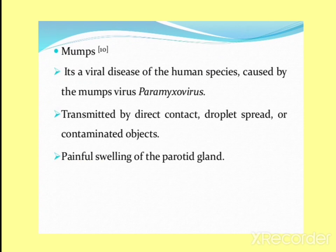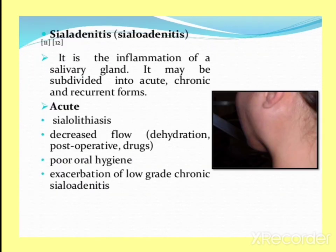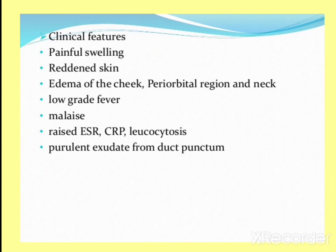Mumps is a viral disease caused by the mumps virus, a paramyxovirus, transmitted by direct contact, droplet spread, or contaminated objects. It causes painful swelling of the parotid gland. Sialadenitis is the inflammation of the salivary gland, which may be in acute, chronic, or recurrent forms, presenting with painful swelling, reddened skin, edema on the cheek, low-grade fever, and malaise.